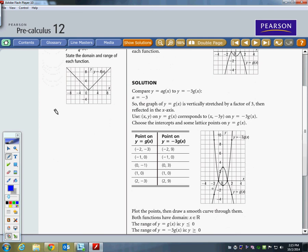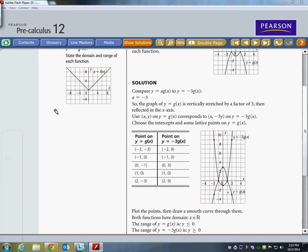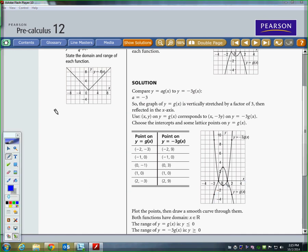So, if the original shape went like this, then our new shape looks like that. And you see, you can see what happened. Because the a value was negative, that's why it's reflected. Because this number is greater than 1, that's why it was stretched and not compressed.